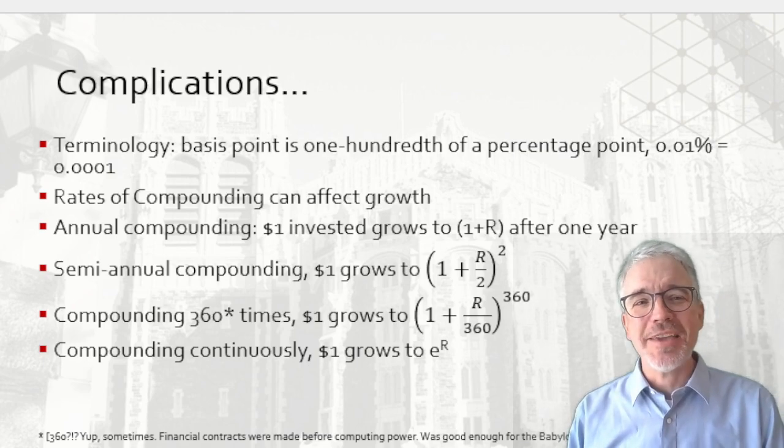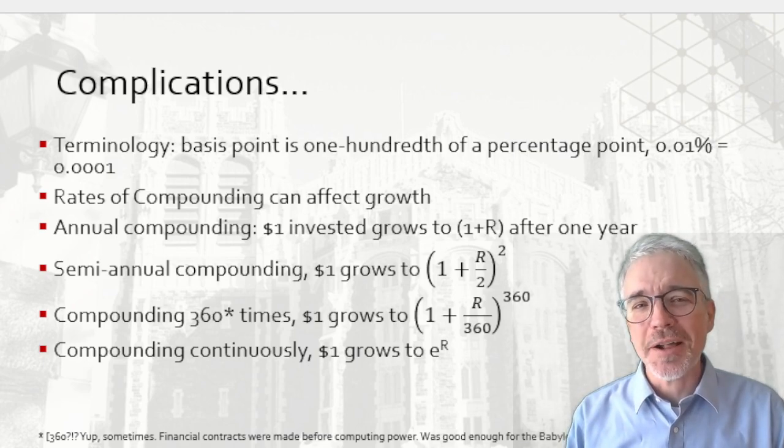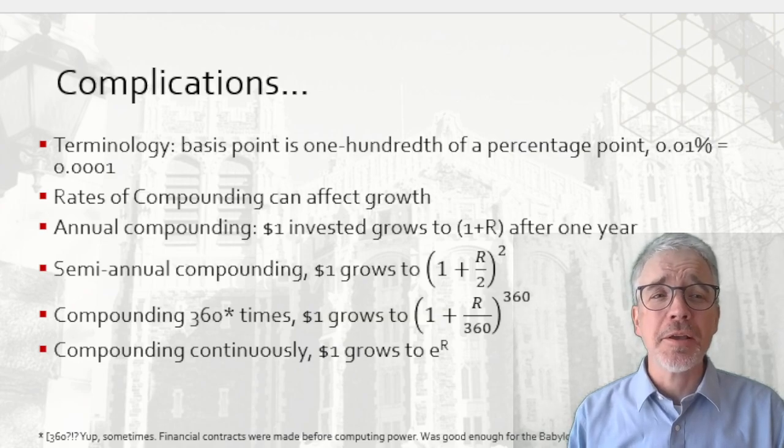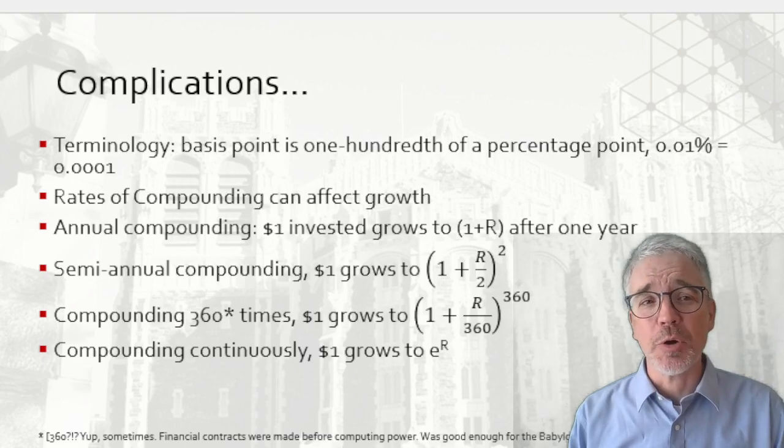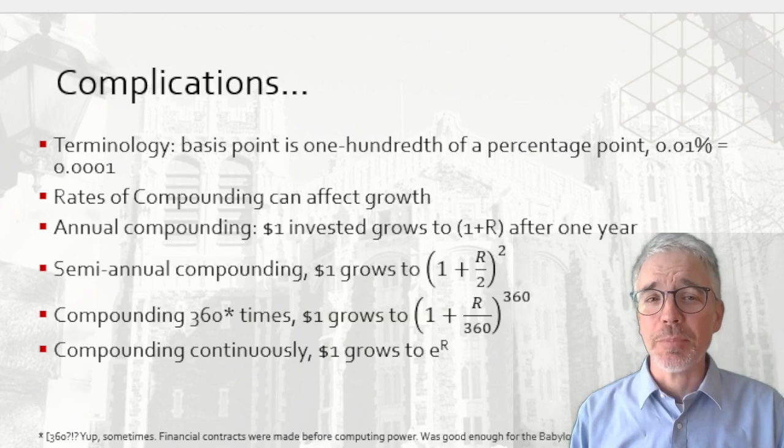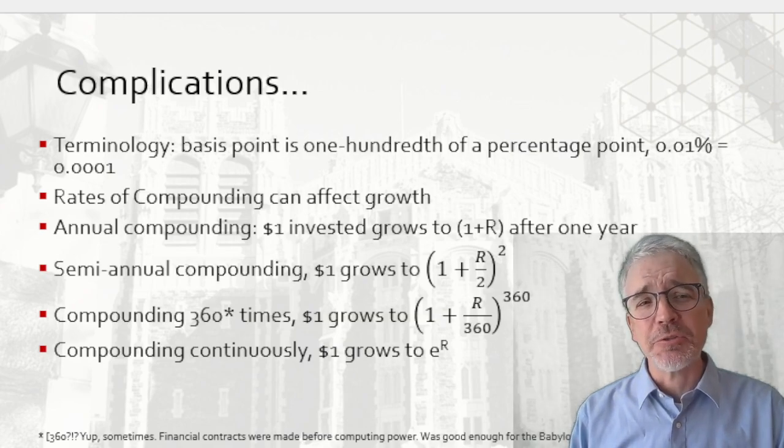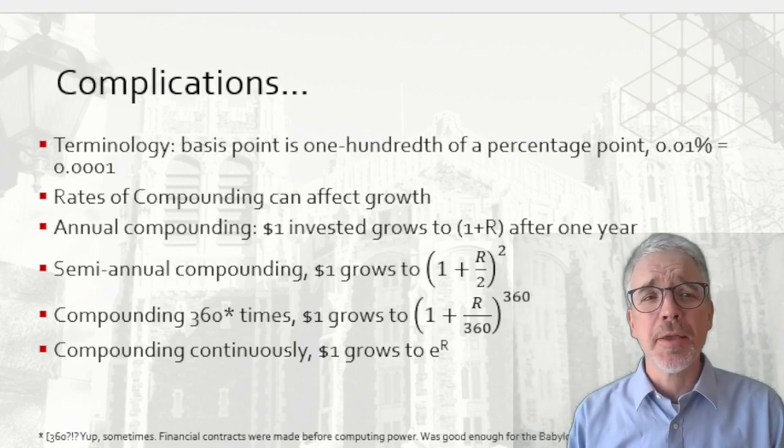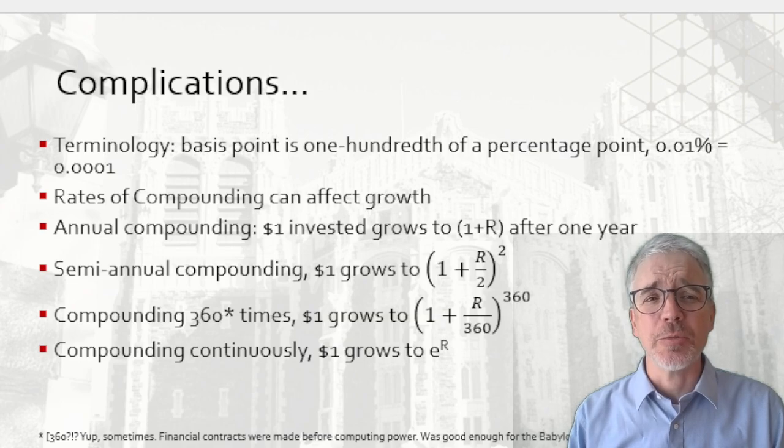All right. Let me note a few complications. Start with a little terminology you might hear. If you listen to the news or you hear people in the finance industry, they'll talk about a basis point. A basis point is 1/100th of a percentage point. So 1% of 1%. 25 basis points is 1 quarter of 1 percentage point. So if the interest rate changes from 3% to 3.25%, that's a 25 basis point increase in the percentage.